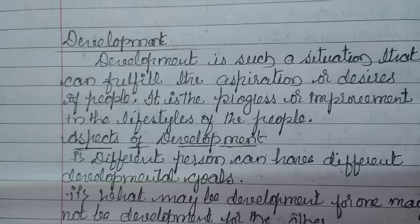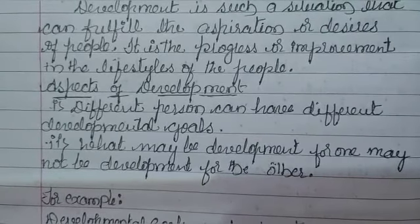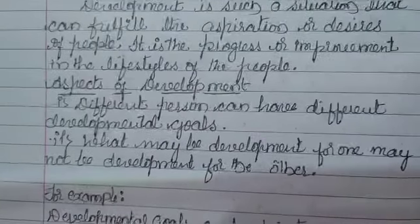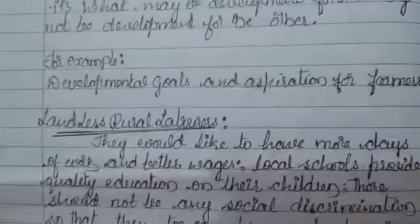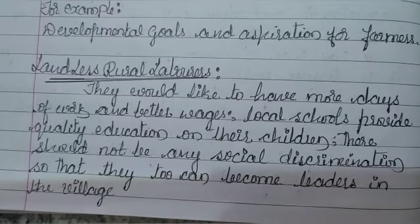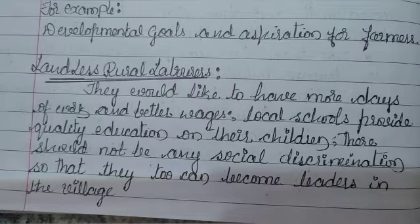As an aspect of development, different people can have different development goals. What may be development for one may not be development for others. For example, looking at development goals for farmers: landless laborers would like to have more days of work and better wages, quality local schools providing education for their children, and no social discrimination so they too can become leaders in the village.